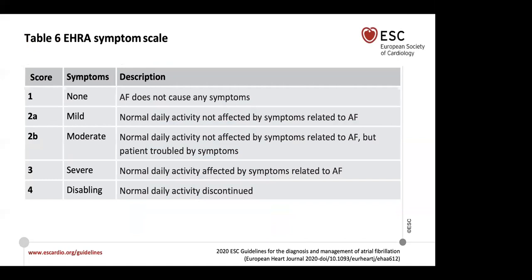The EHRA symptom scale is very similar to the New York Heart Association classification for dyspnea. Class 1 is no symptoms; class 2 is mild; class 3 is mild to moderate; class 4 is severe and disabling. This is used for classification and helps us understand how patients feel from their atrial fibrillation.